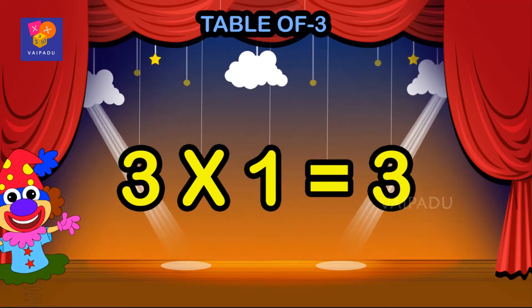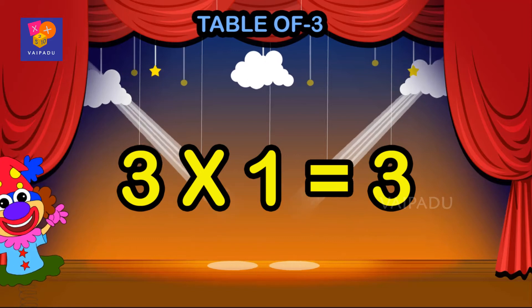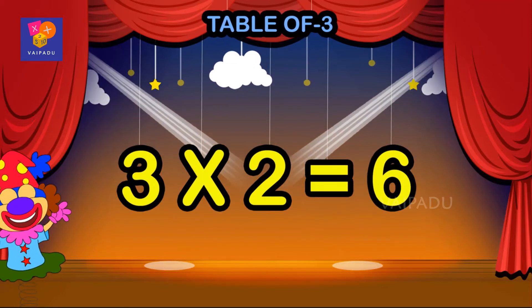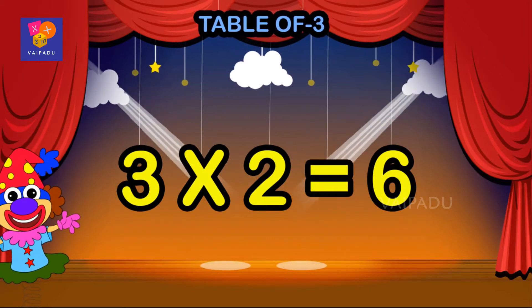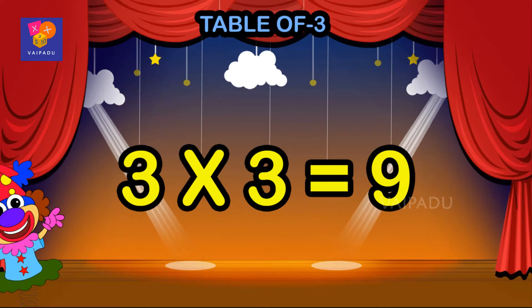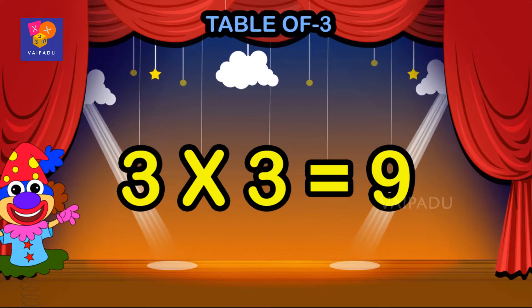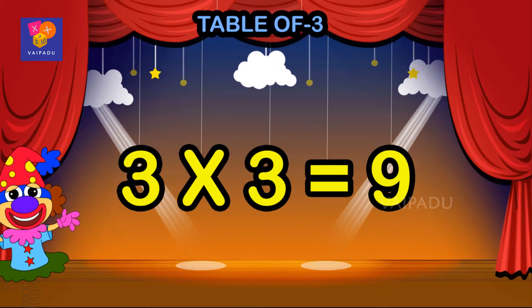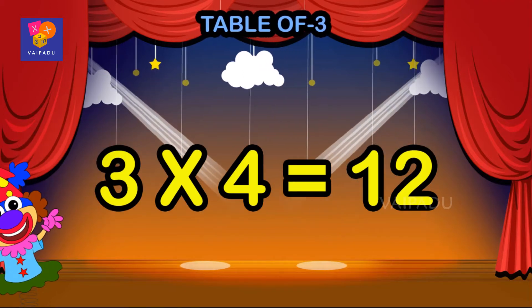Three ones are three, three twos are six, three threes are nine, three fours are twelve.